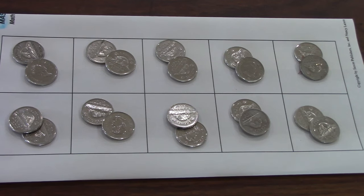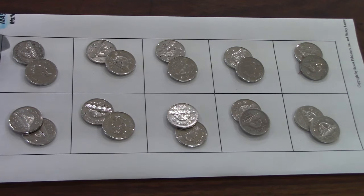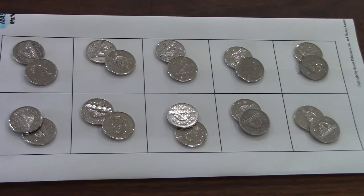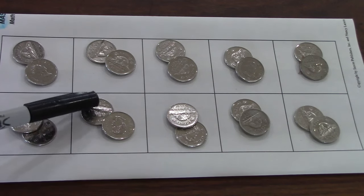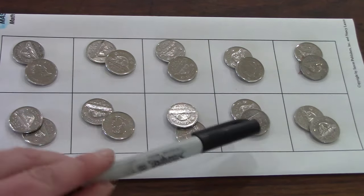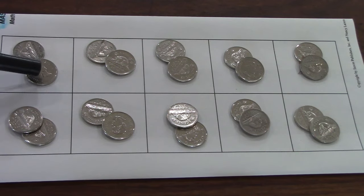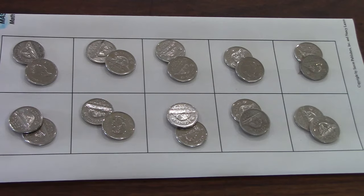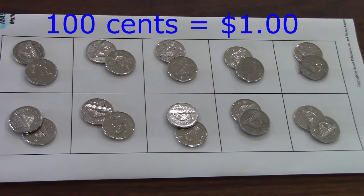Let's look at my ten frame now — those are nickels. Do you know how many nickels you would need to equal one dollar, or one hundred cents? You would need twenty. That's why I have two nickels in each square of the ten frame — every nickel is five cents, so that's ten cents in each square. Five, ten, fifteen, twenty, twenty-five, thirty, thirty-five, forty, forty-five, fifty, fifty-five, sixty, sixty-five, seventy, seventy-five, eighty, eighty-five, ninety, ninety-five, one hundred. One hundred cents equals a dollar.